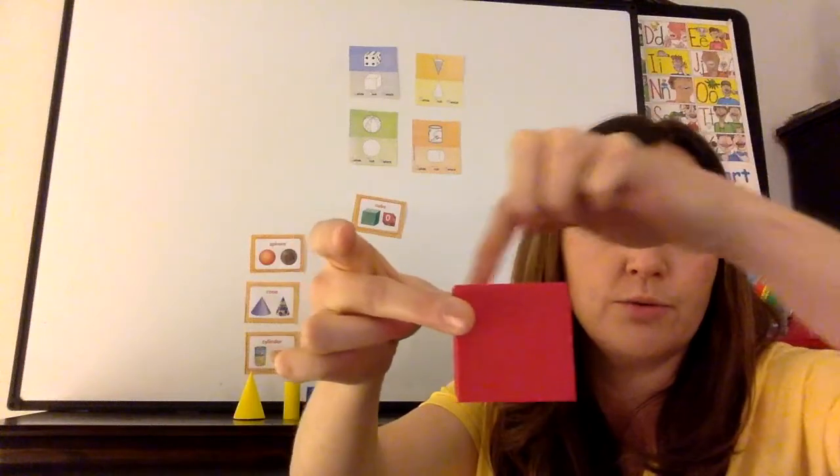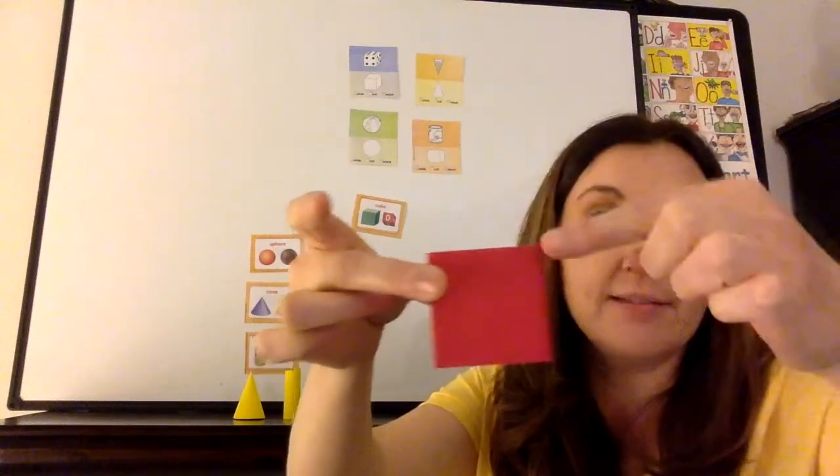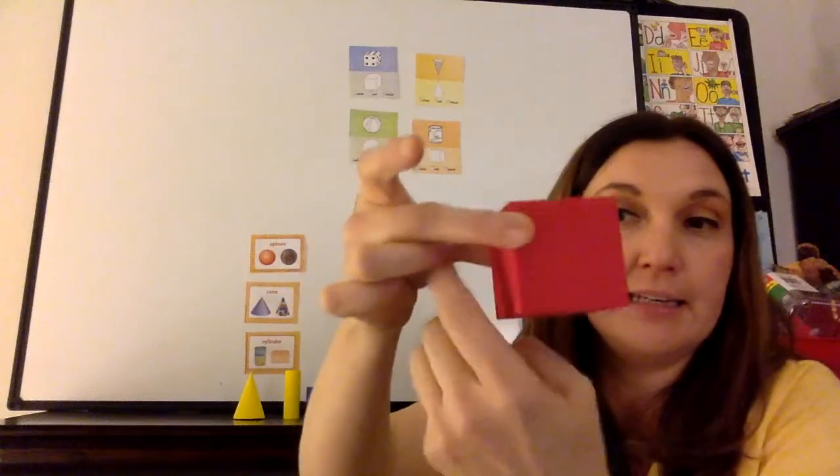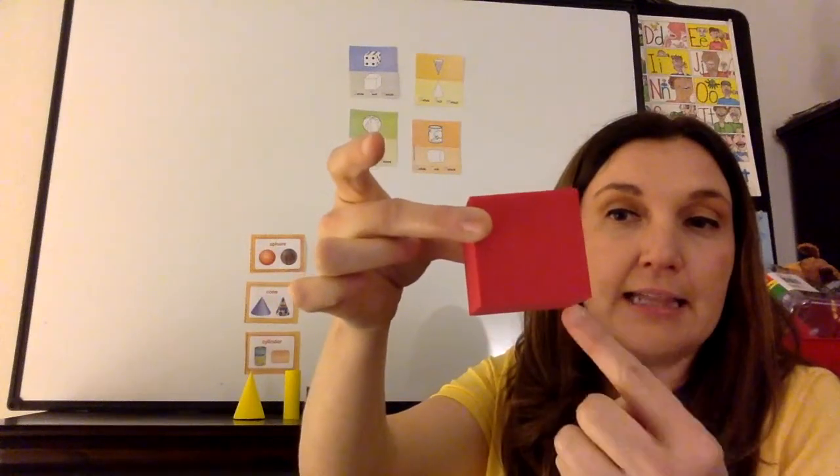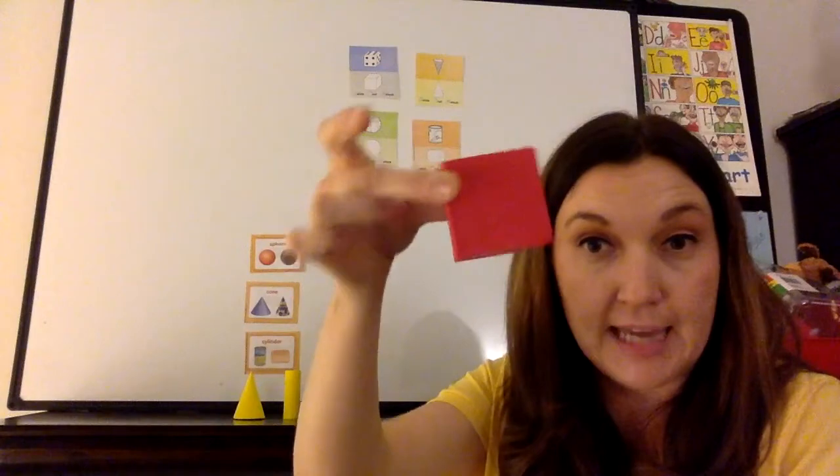So we will count the edges on our shape that's already put together. 1, 2, 3, 4, 5, 6, 7, 8, 9, 10, 11, 12. This is a cube.